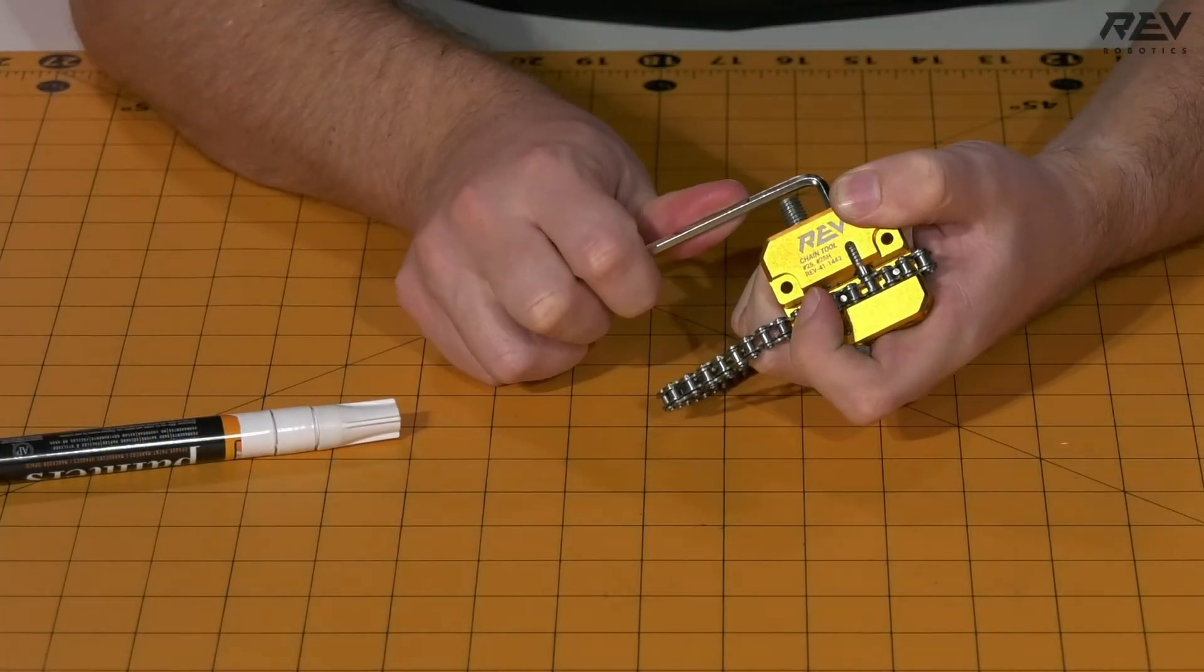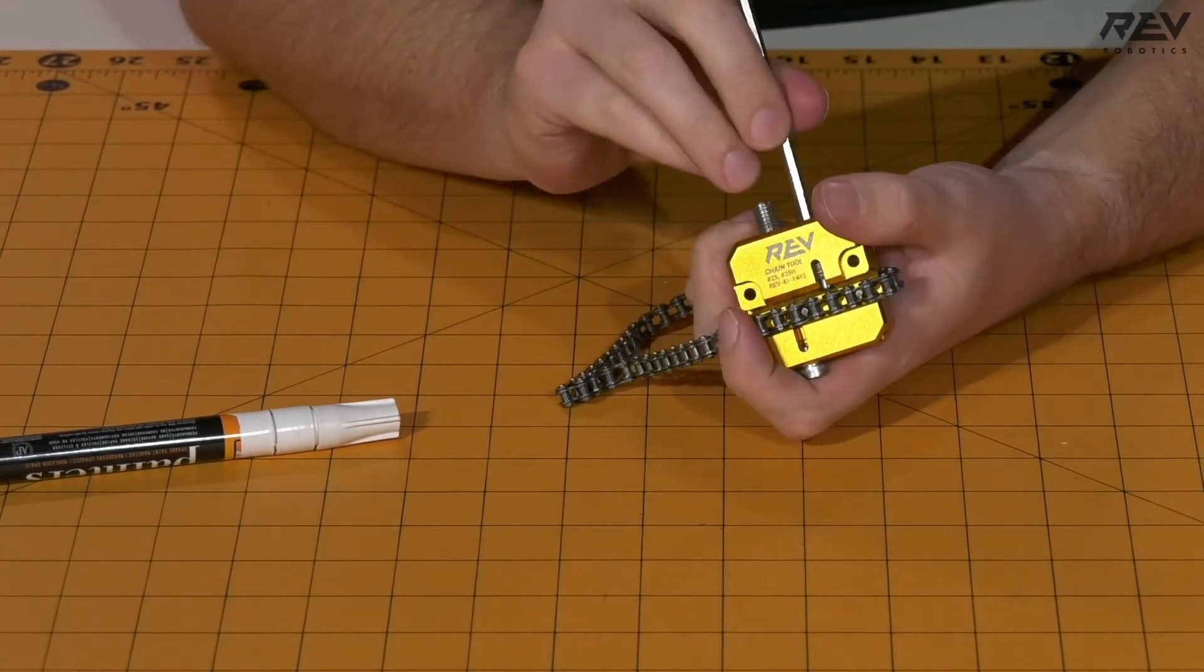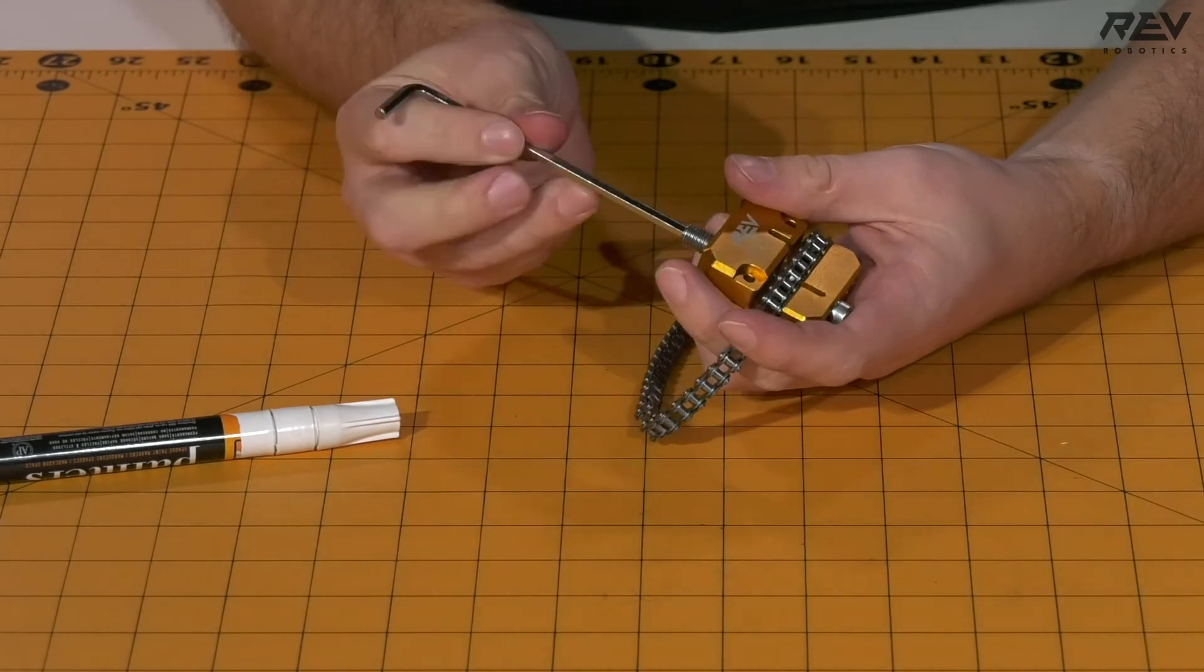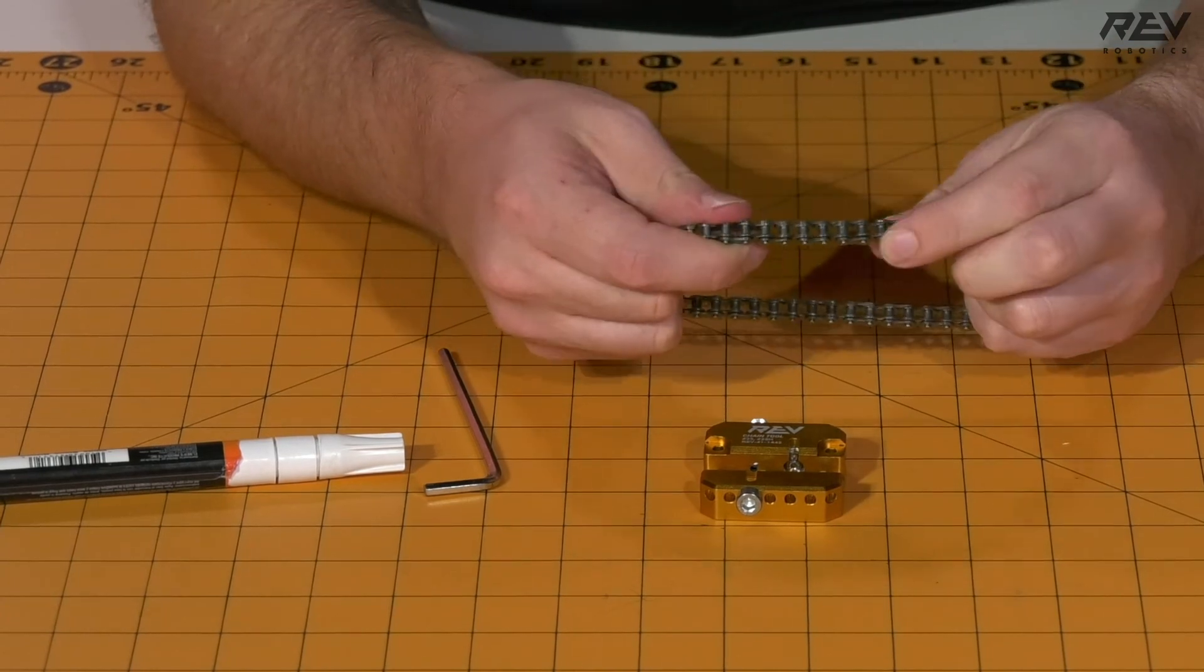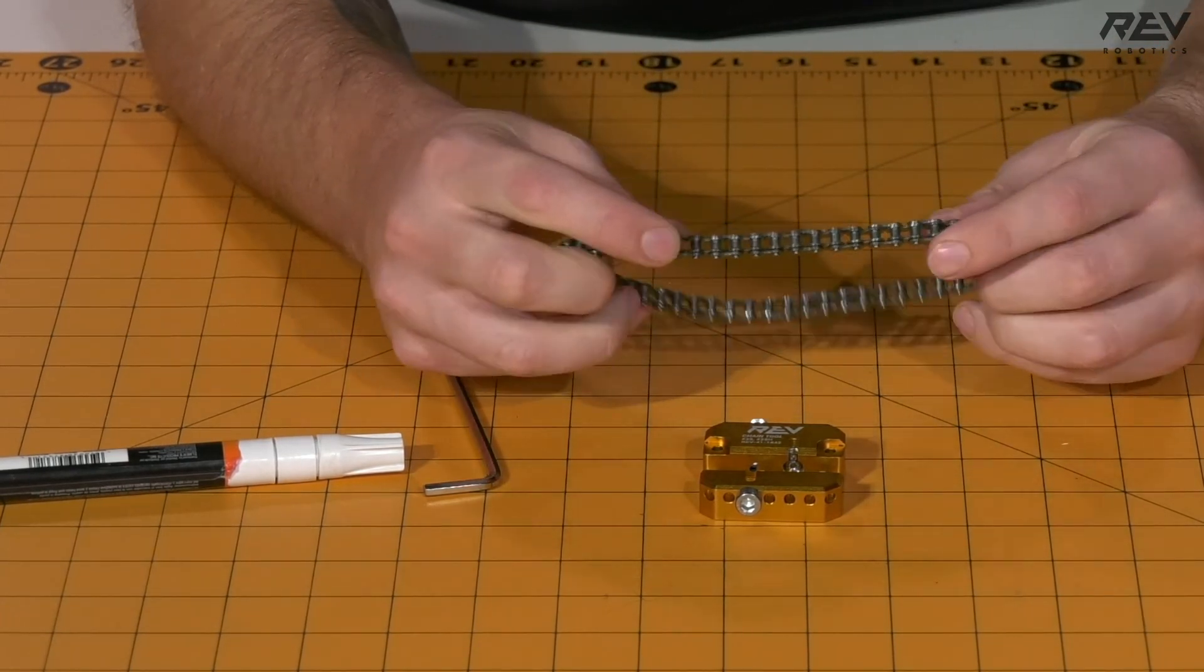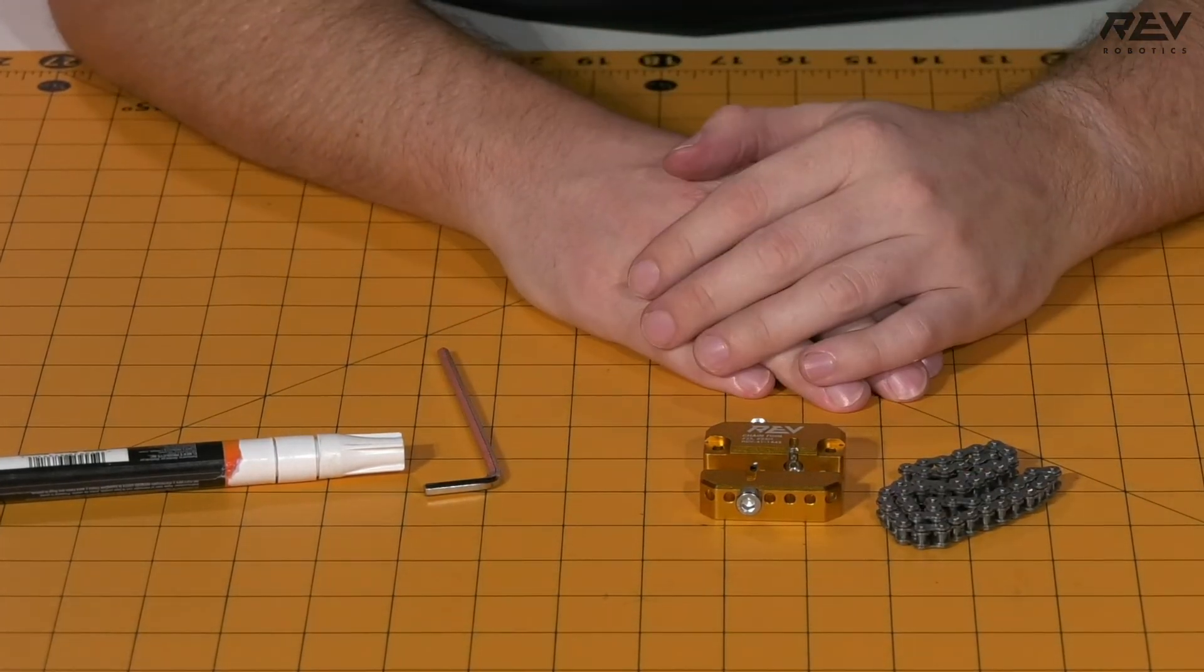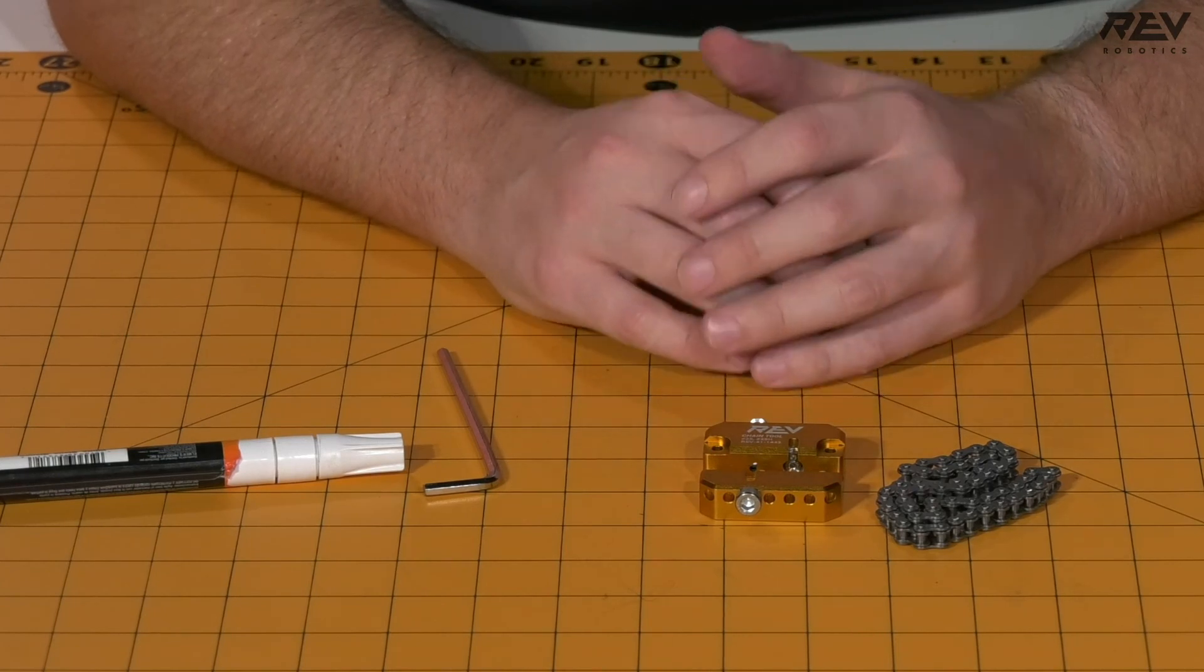So now that the pin is completely reseated in, we can end up unscrewing this from the chain tool. Remove it out. Double check to make sure that the pin has been completely seated, doing a little bit of a visual inspection. And then once that is complete, we end up needing to make one more 56 link chain to complete this drivetrain.